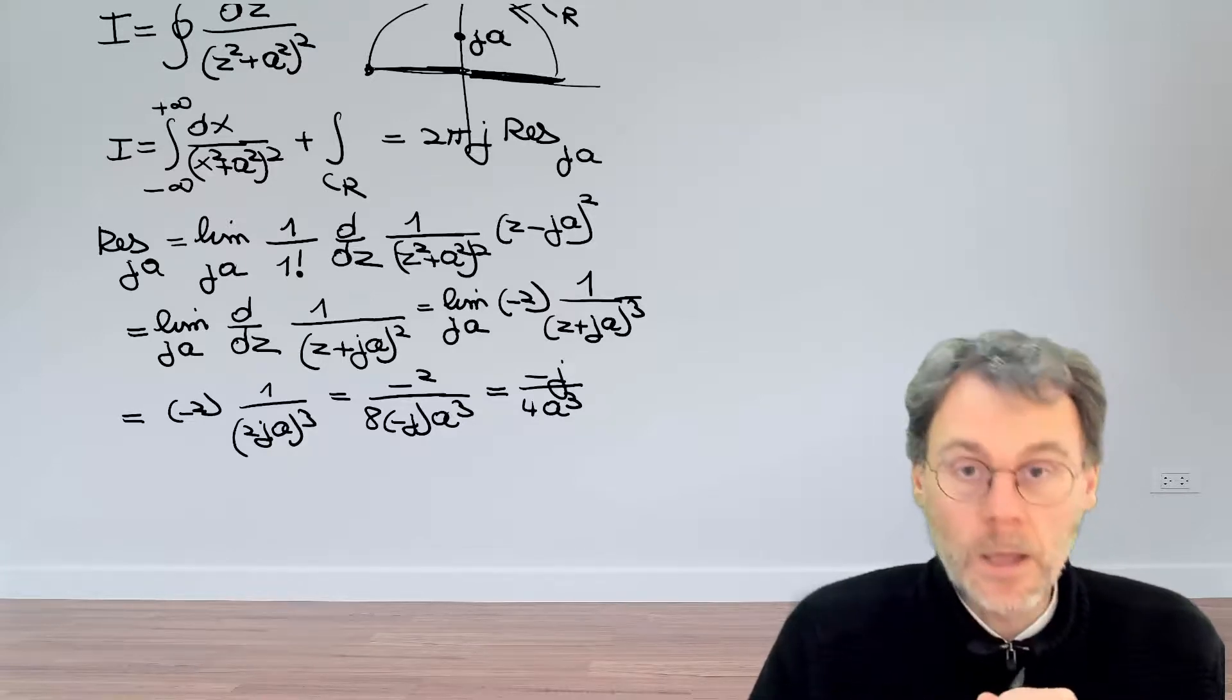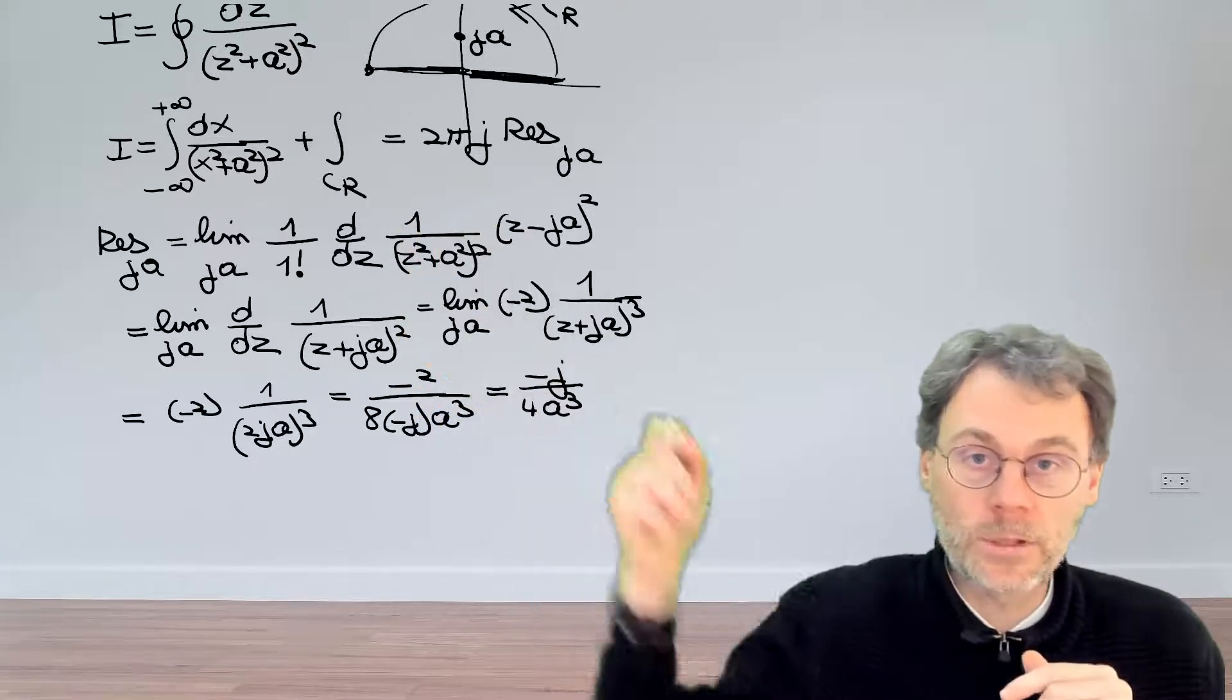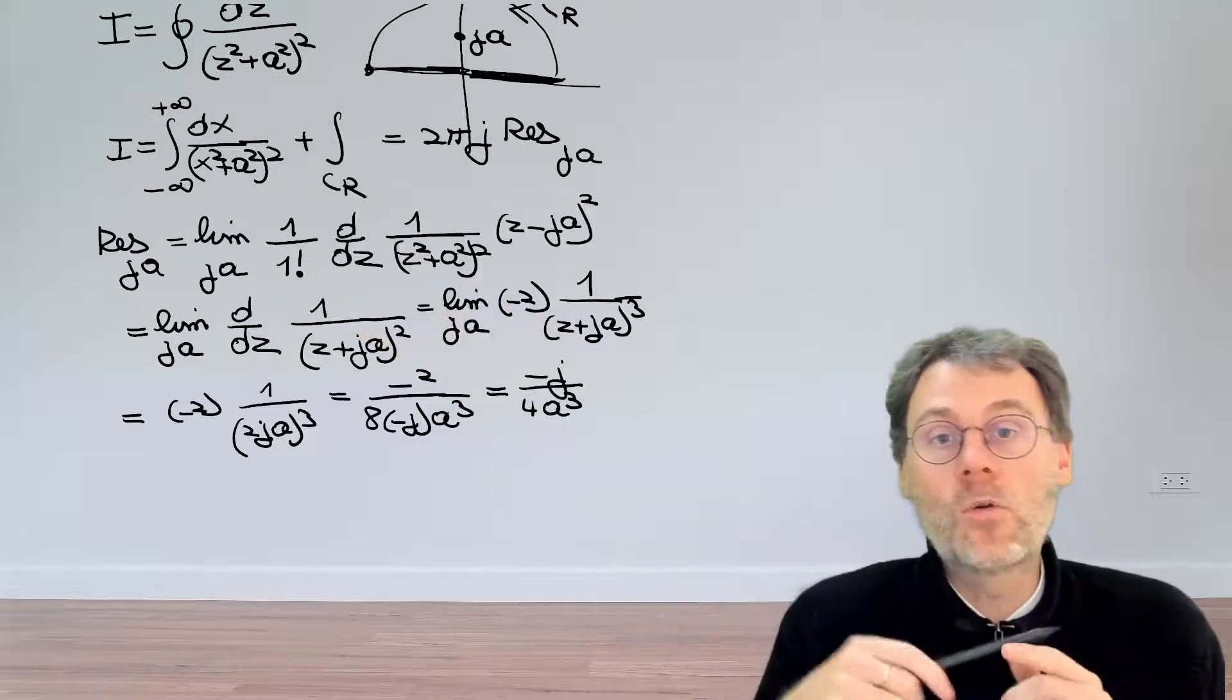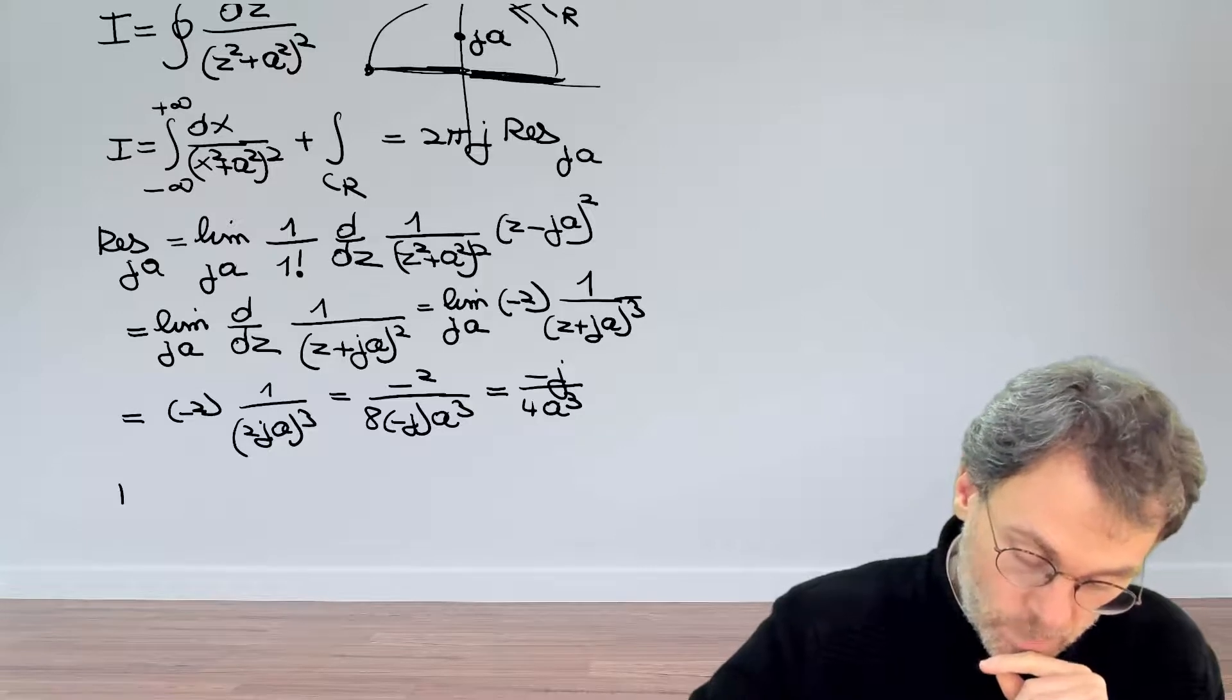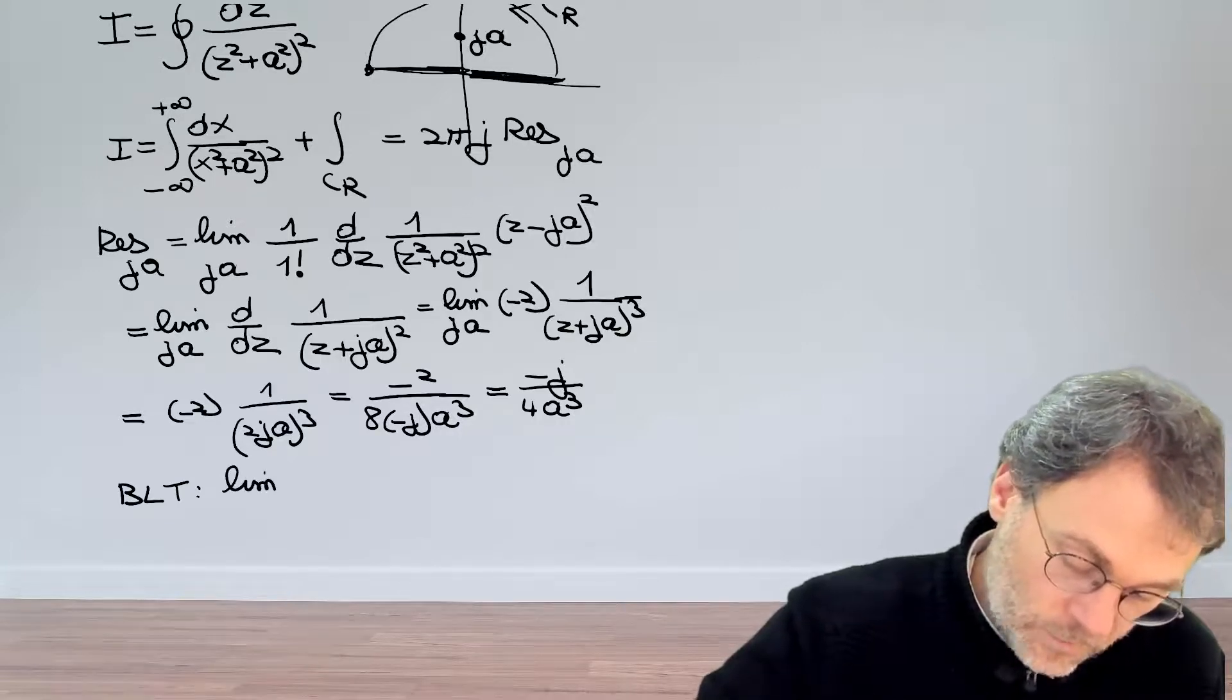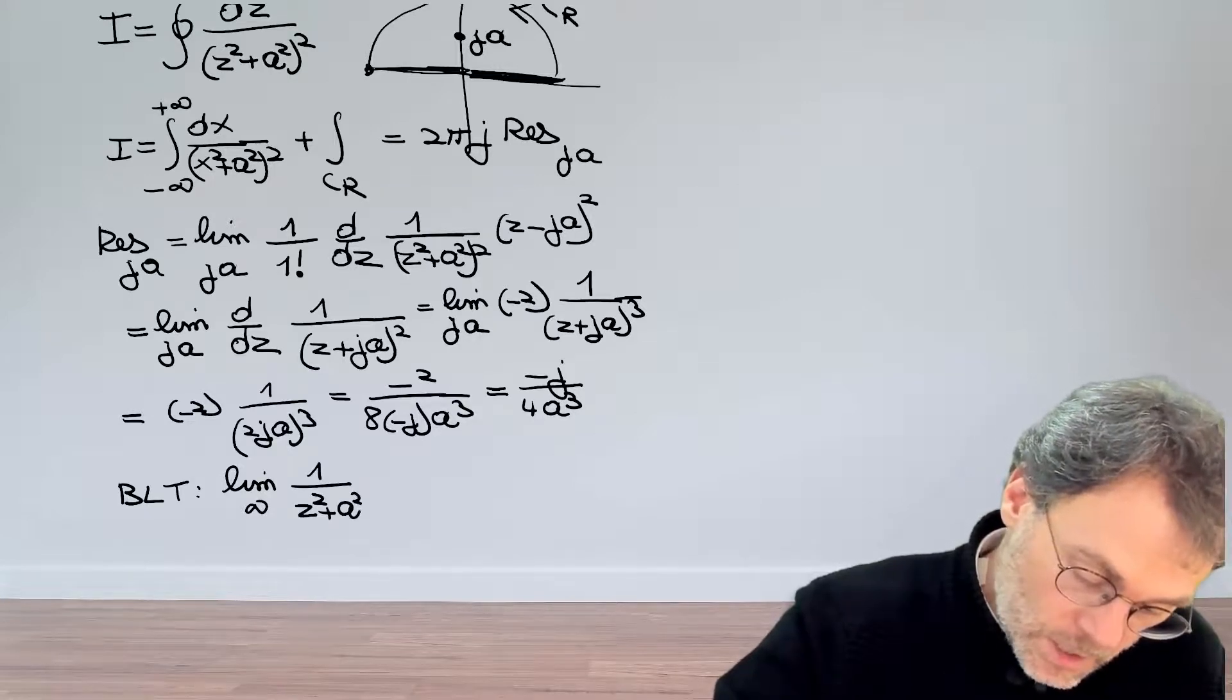That's very useful of course. Another thing we need to worry about is the contribution here from this circular segment in the limit of big R going towards infinity. If you look at our integrand, there's nowhere a complex exponential inside, so we need to look at the big limit theorem. And for the big limit theorem we need to consider what happens at infinity.